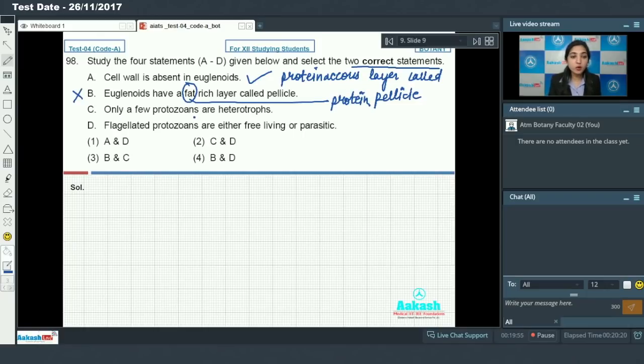Only a few protozoans are heterotrophs. No. All the protozoans that are known to us are heterotrophs. So it should be all. Flagellated protozoans are either free living or parasitic. This is correct. So out of these four A and D are correct. So answer to this question is option number 1.